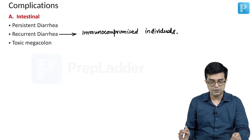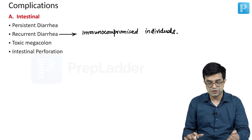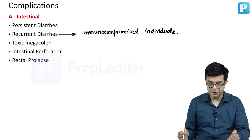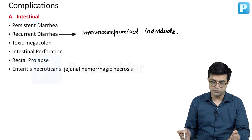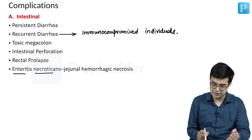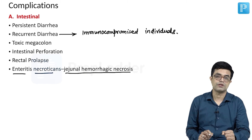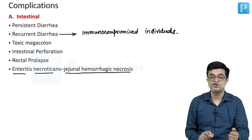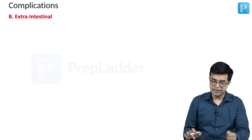Toxic megacolon can develop. There can be intestinal perforation, rectal prolapse, and a syndrome called enteritis necroticans — jejunal hemorrhagic necrosis — in which sometimes massive GI bleed can also be seen.